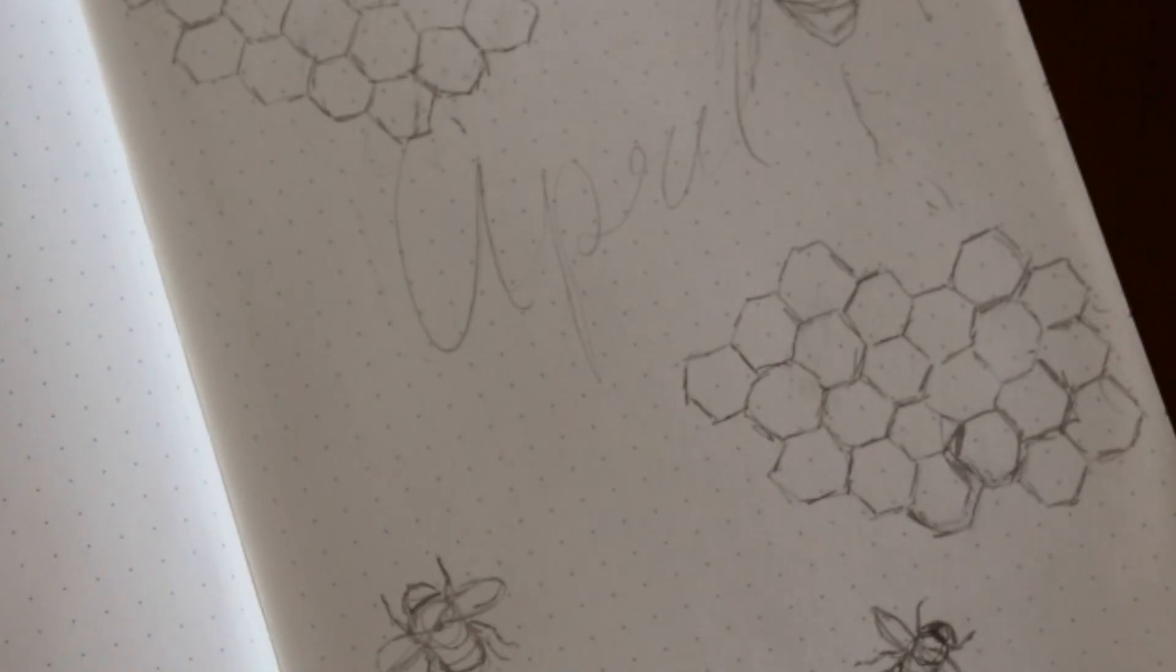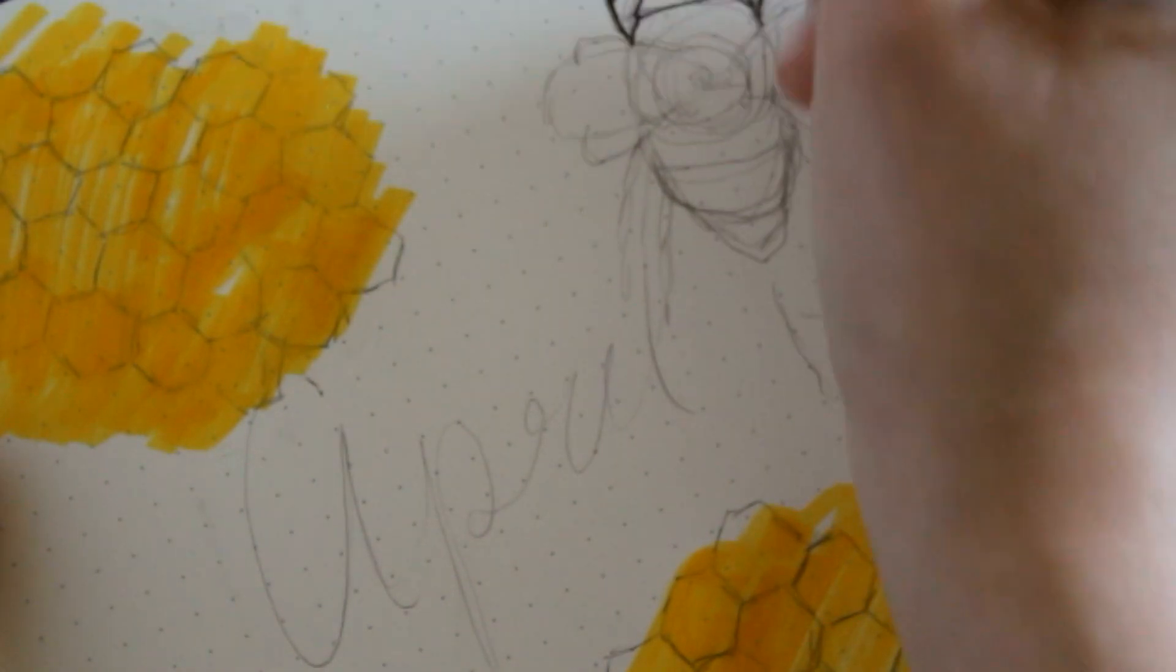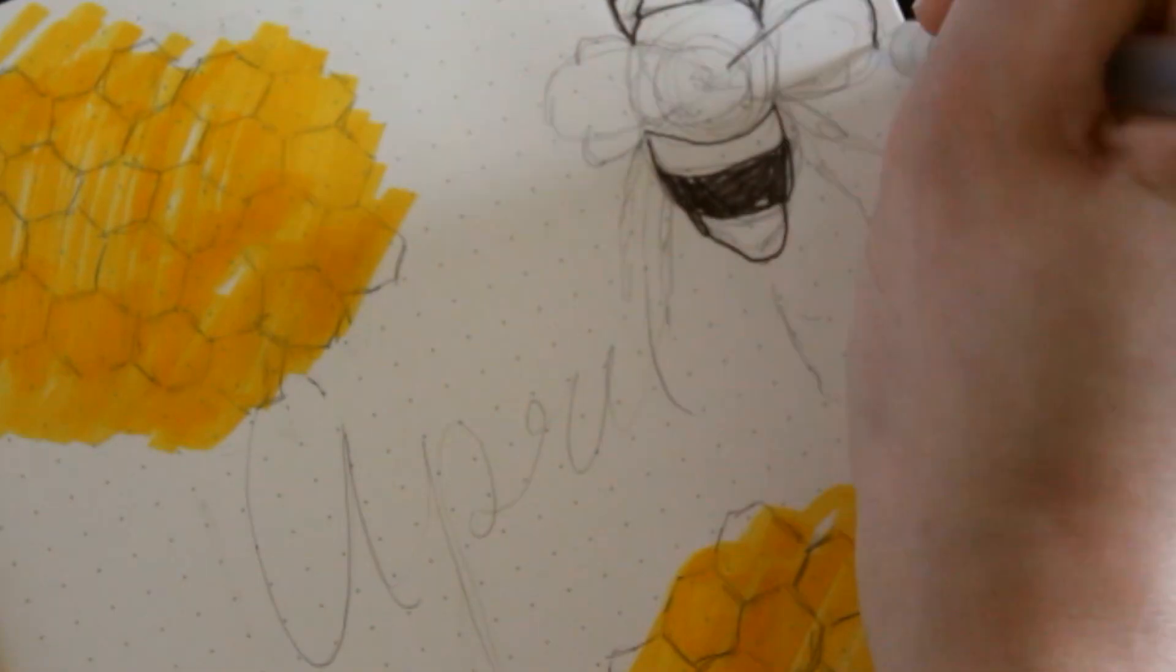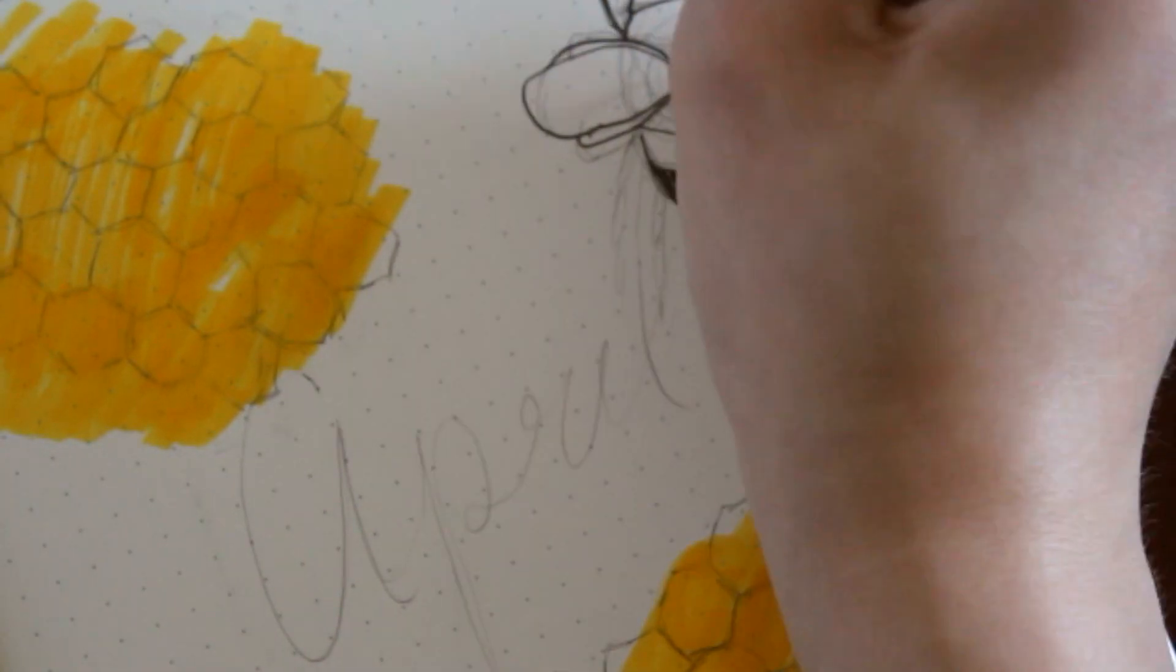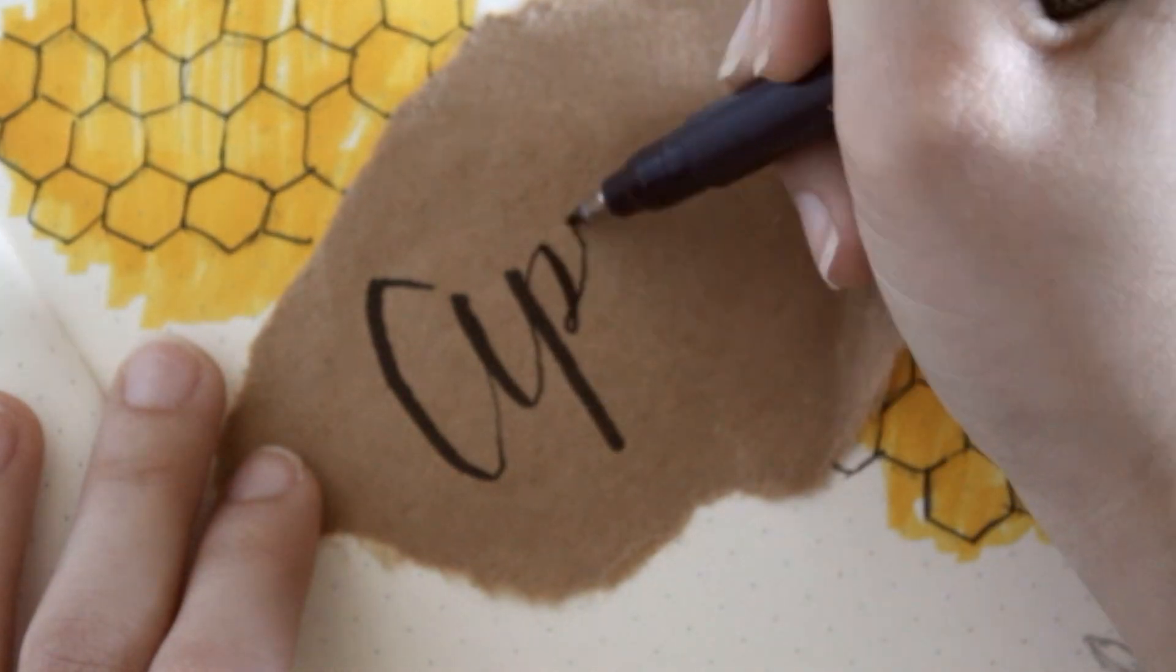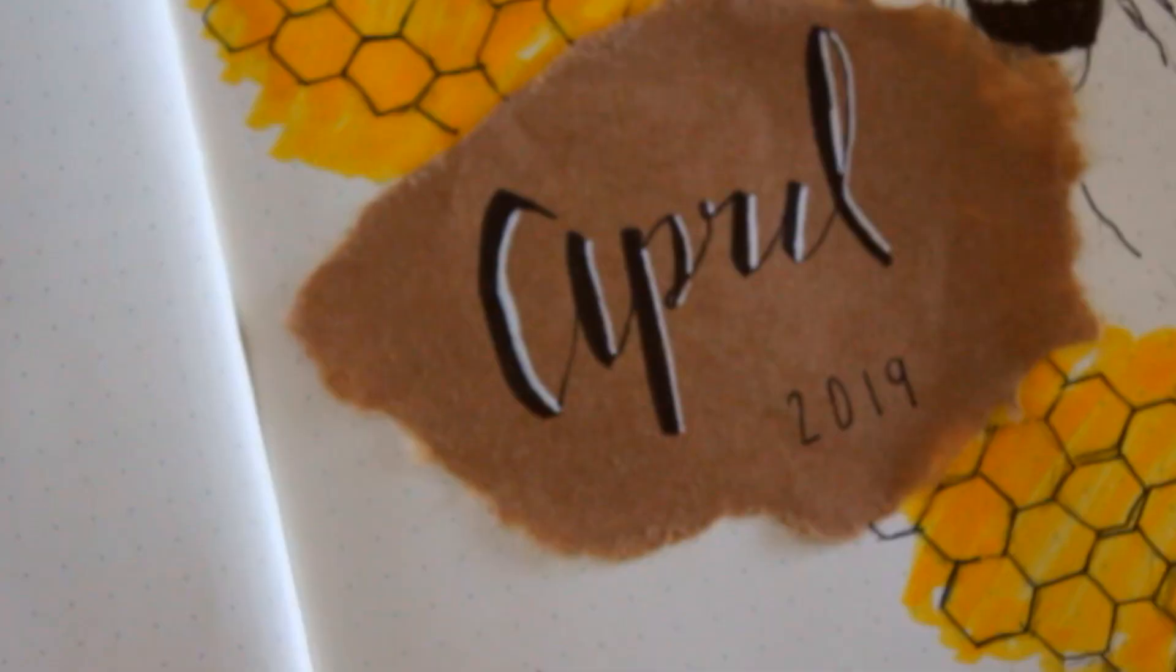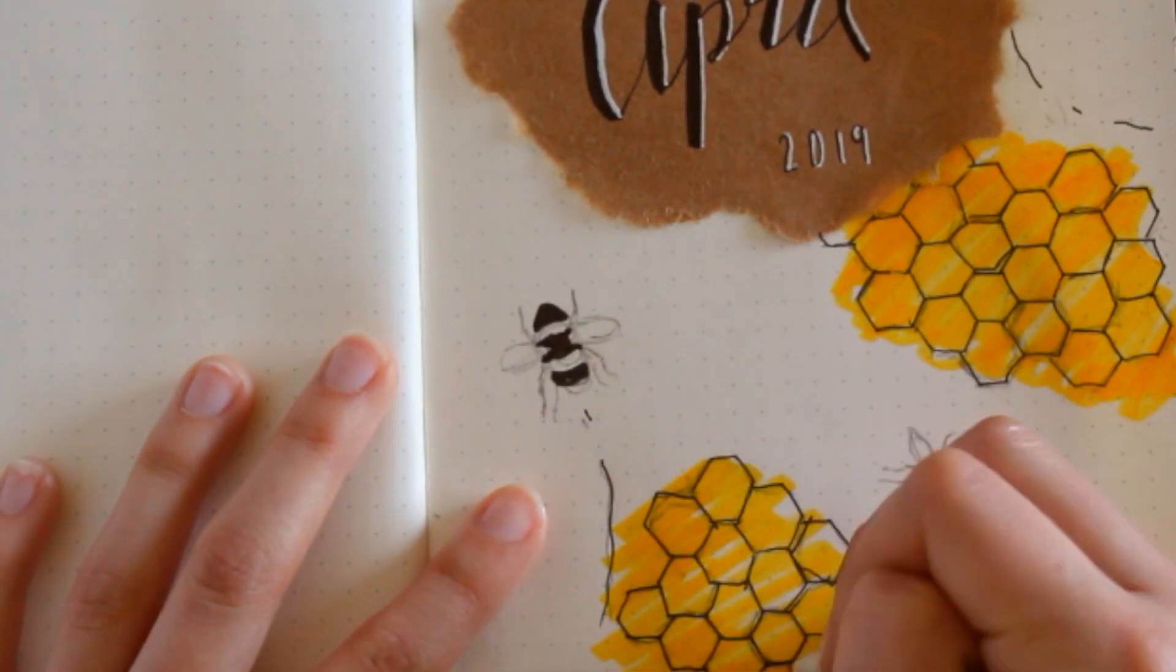All of the pens and markers I will be using are going to be linked in the description, these are just my Crayola super tips. For April, I'm actually going to be using my black Tombow Fudenosuke brush pen, and then using a white ink pen as the drop shadow, because I think it makes it look really cute and pops a little more.